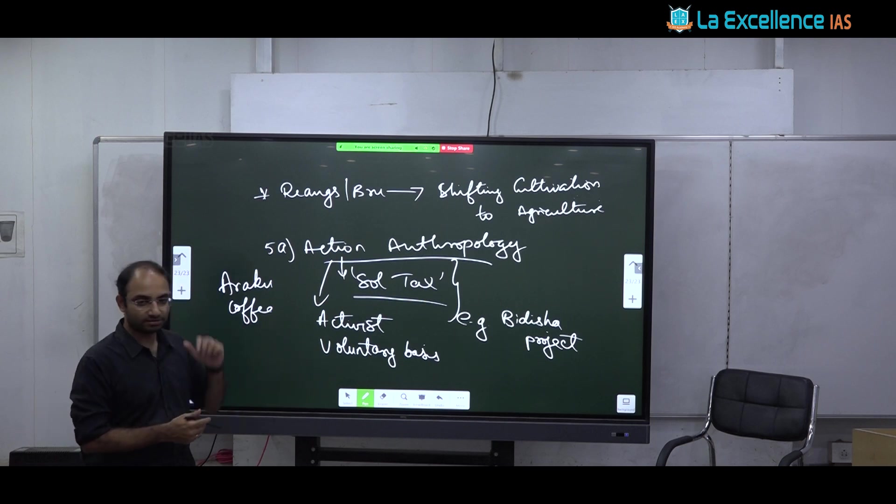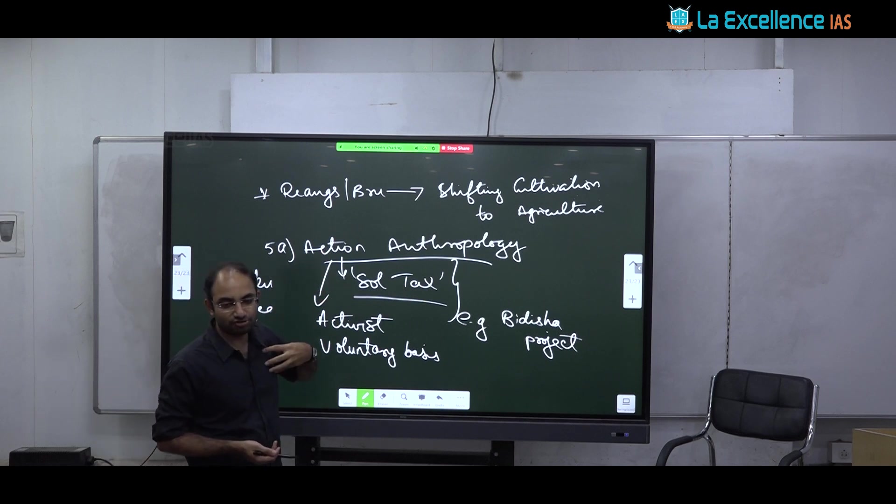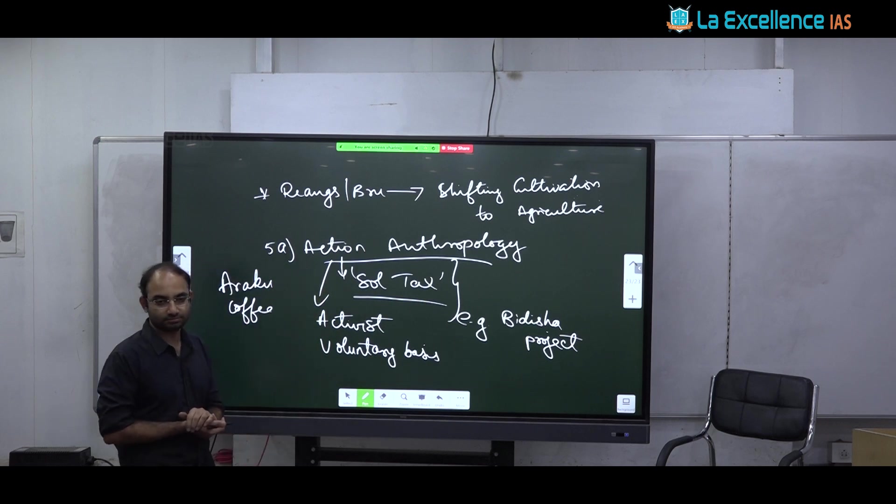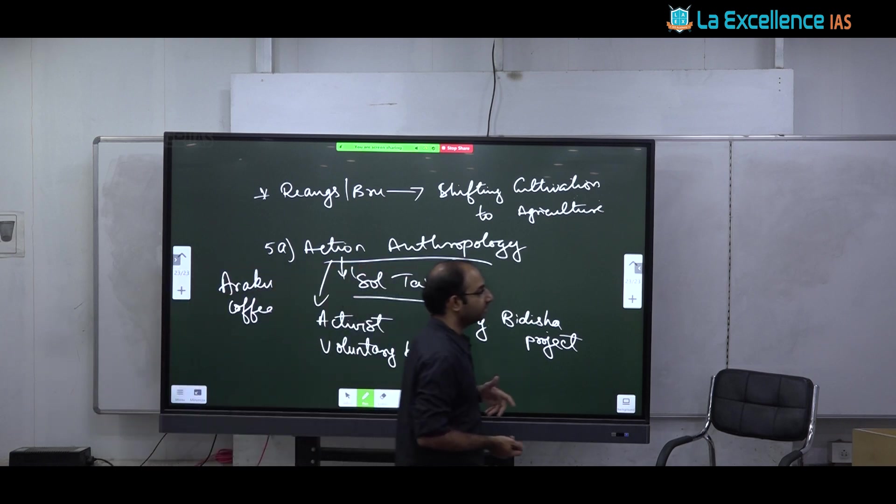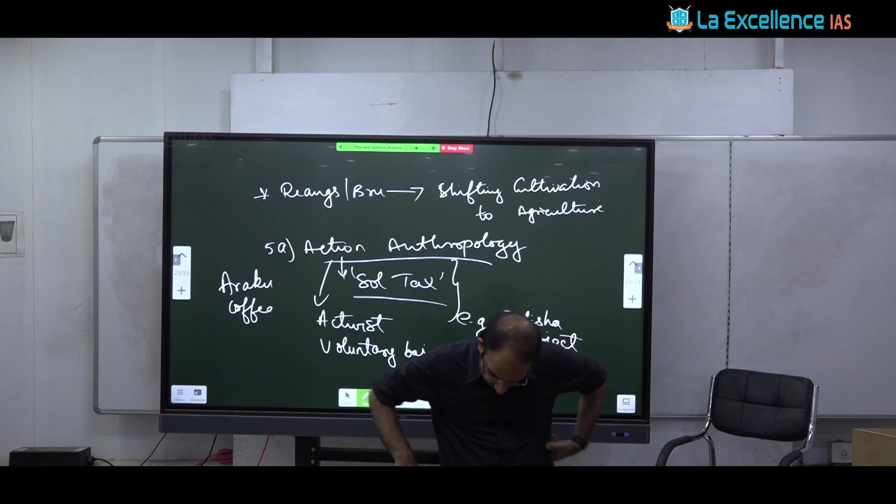So that is why this idea though in theory sounds very good, it did not really practically it is not possible. And next part is Role of Anthropology in Rural and Tribal Development. Here very simple. When you talk about Role of Anthropology in Rural and Tribal Development, you need to take many examples. We need to take many case studies and discuss. For Rural Development, the easiest case studies to take are how we have overcome open defecation, Fuch Bharat Abhyan story.